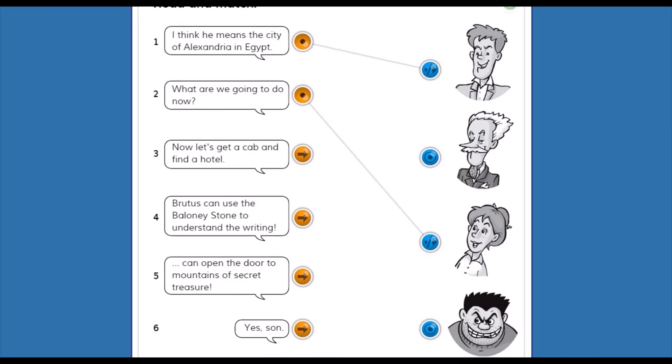Number three. Now let's get a cab and find a hotel. Ahora vamos por un taxi y vayámonos al hotel. ¿Quién dijo eso? Diggory Bones.